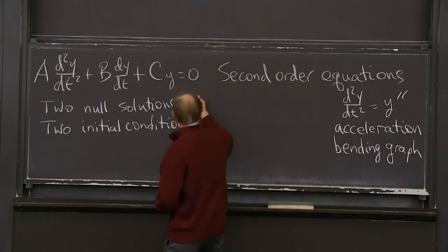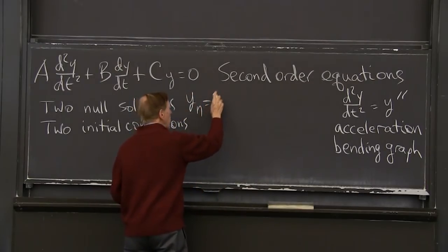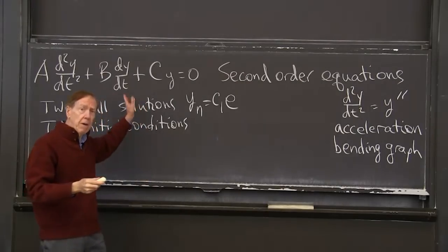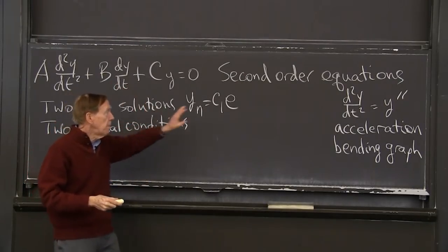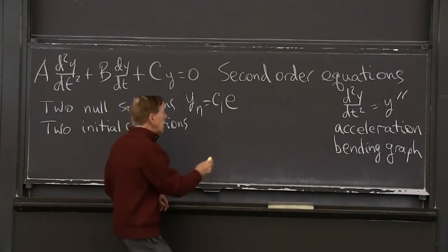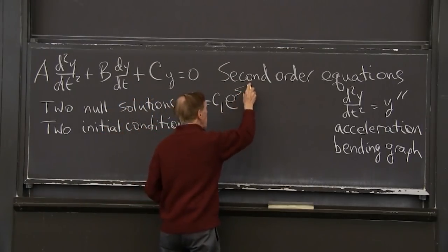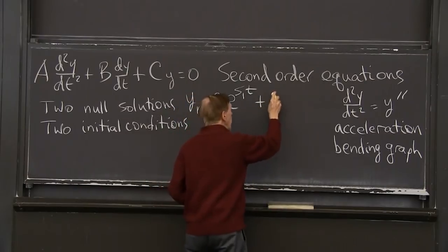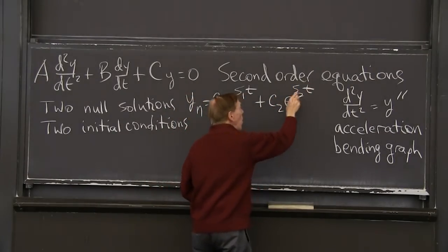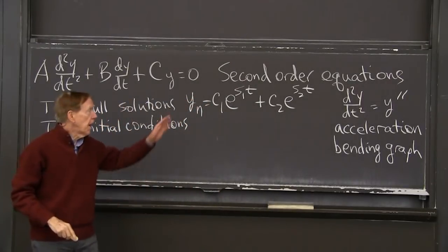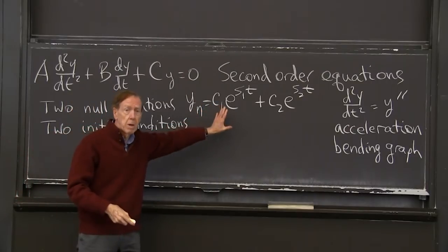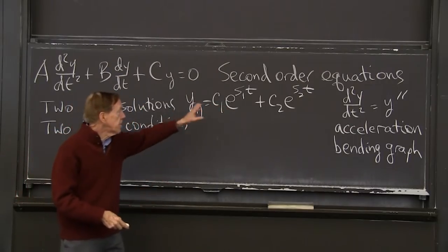So y_null will be a combination of exponentials. Having constant coefficients means exponentials in the solution. So e to some exponent and another one to a hopefully different exponent. Sometimes if s1 equals s2, that'll be a special case with a slight change. But this is typical.